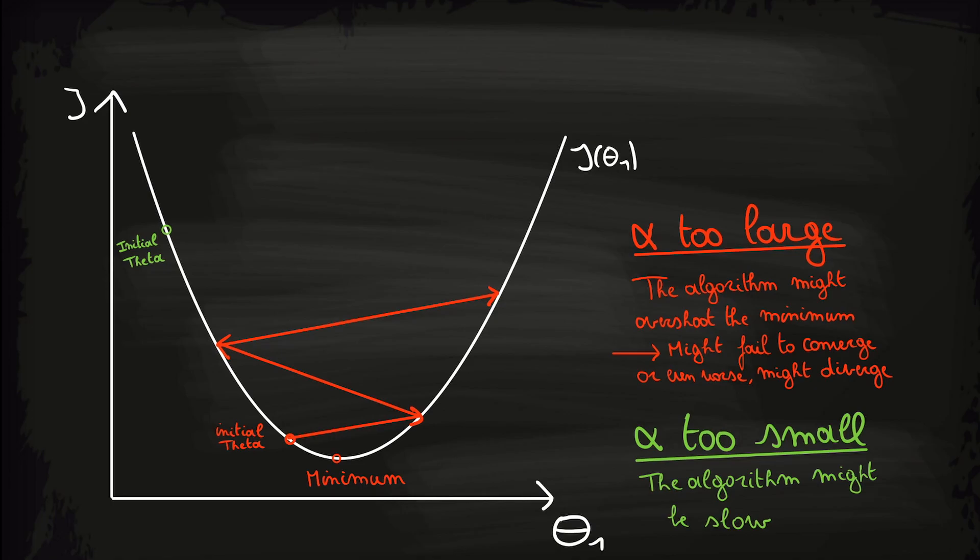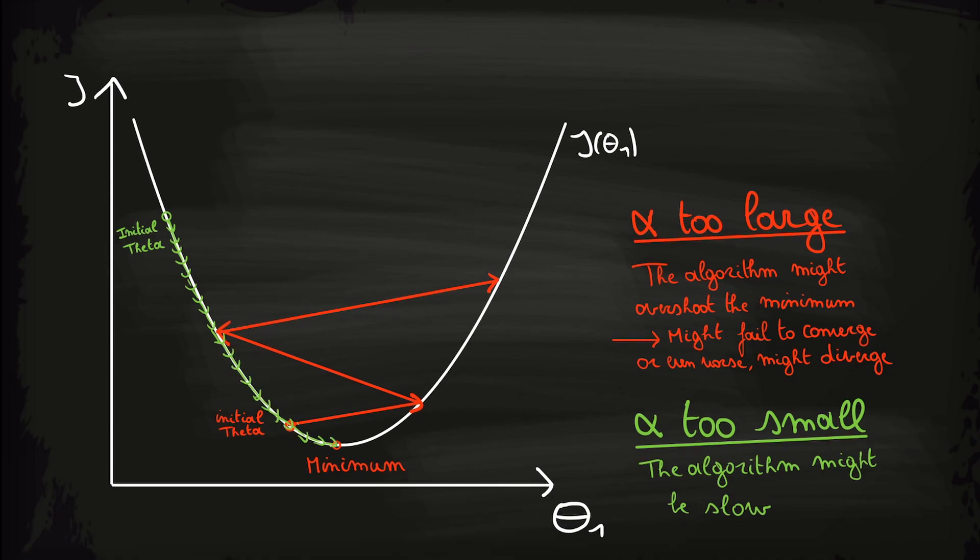On the other hand, if you take a value for alpha that is way too small, it will probably take a long time for the algorithm to converge. So ideally we want a value for alpha that is neither too small, nor too large. But to explain the concept of gradient descent, we don't need to know this yet. We will see how to get a good value for alpha in a later video.